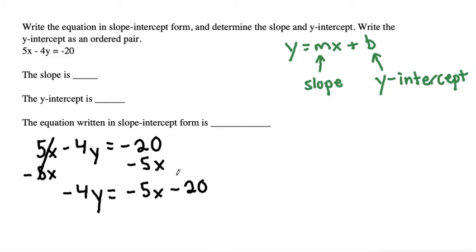So we're getting closer to our form, but we still want the y to be completely by itself. We don't want it to be multiplied by the negative 4. So to get rid of that negative 4, since it's multiplied by y, we'll use the inverse operation and divide both sides by negative 4. When we have multiple terms, we can divide every term by that negative 4.